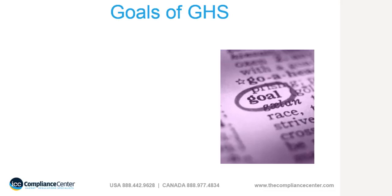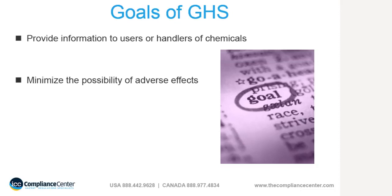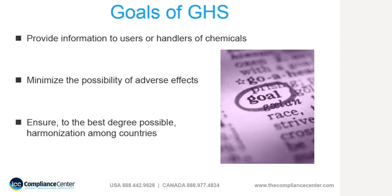Many people ask, why do we need a harmonized system for hazard communication? Well, first of all, it is generally recognized that people who must handle hazardous materials have a right to know about the dangers involved. The Globally Harmonized System will provide information to handlers throughout the lifespan of the product about the dangers, and how to use the product safely. Doing this will ensure that adverse effects to people or the environment are minimized. And finally, through harmonization, people all over the world will receive standard information. For example, a worker in Europe or Asia will be provided with the same safety information as a worker in Canada.